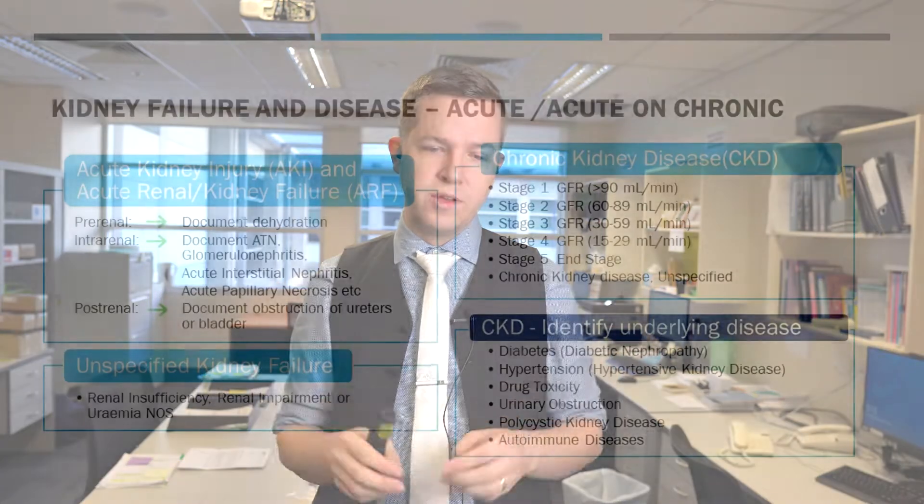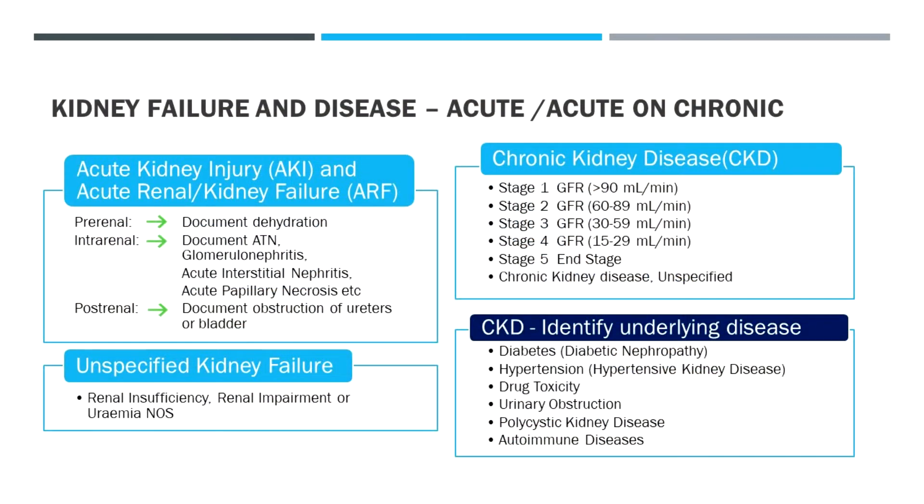If there's just unspecified kidney failure, it comes up as renal impairment or uremia, not otherwise specified — not a great diagnosis and doesn't code well.